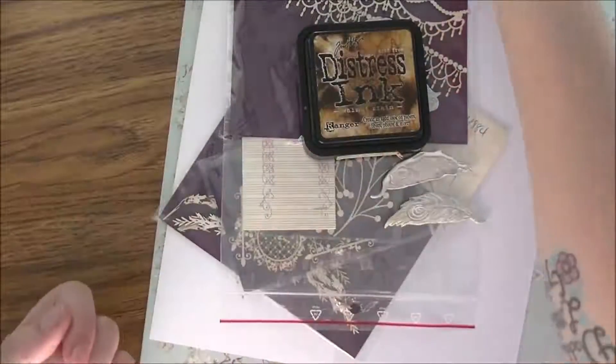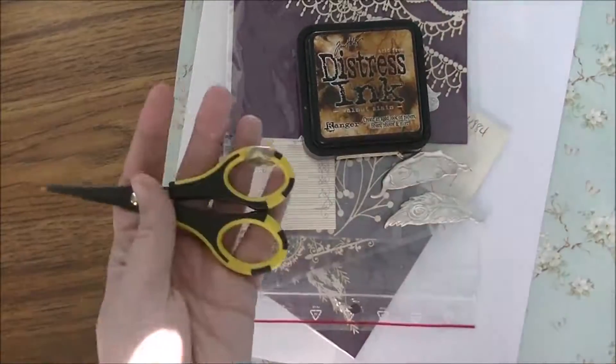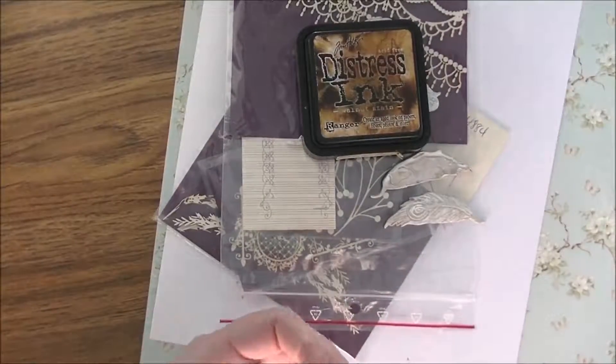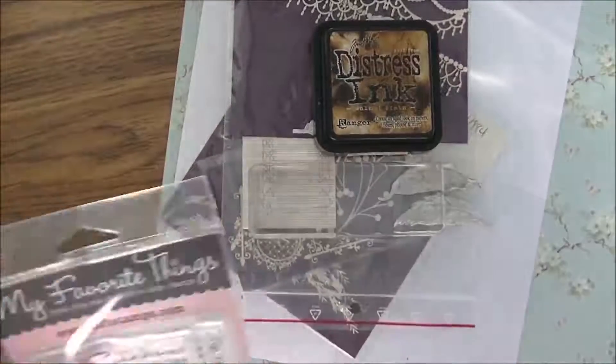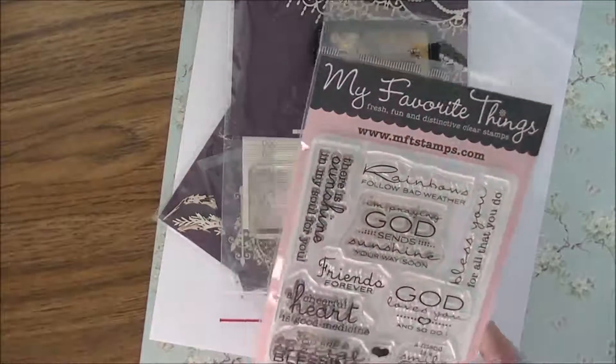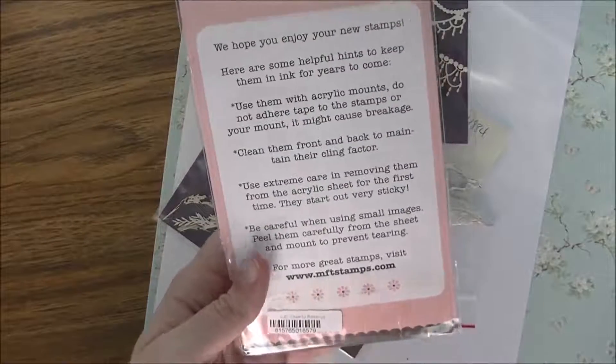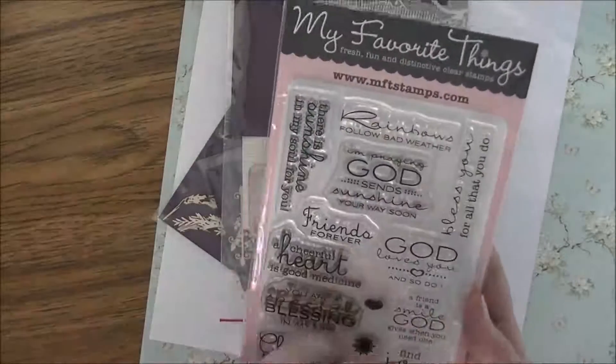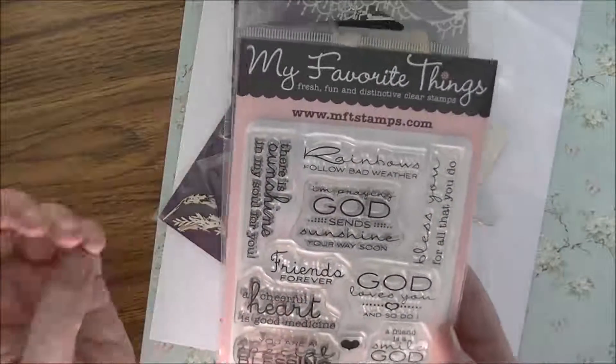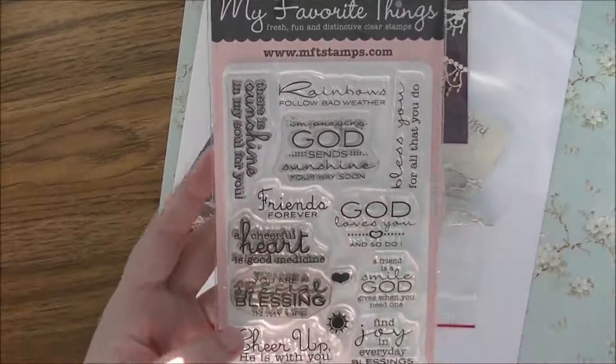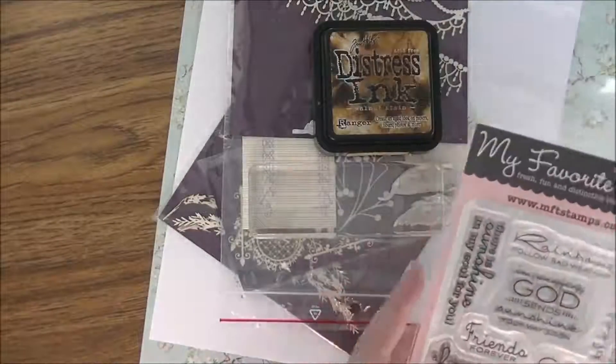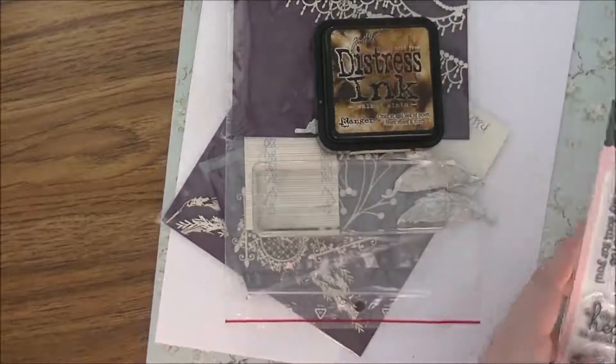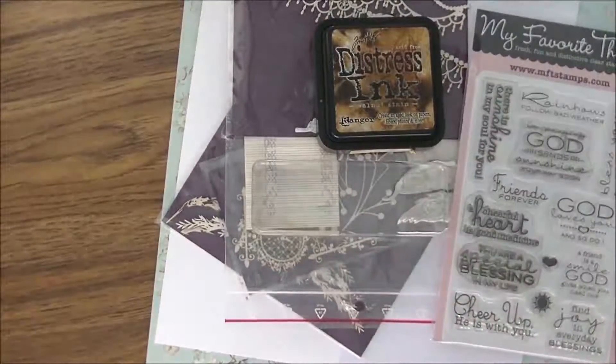A pair of scissors and I have a clear acrylic block because I did pull out this stamp from my stash - it is called Cheerful Blessings. Lots of them are religious-based, so we're probably going to use one of these unless I find one of those little cut-aparts that I like - I haven't decided yet. So that's what we have to make our card and I will film the process for you.